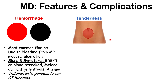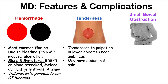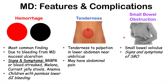Patients can also experience tenderness or pain — particularly on palpation around the lower abdomen near the umbilicus — or spontaneous abdominal pain. One complication is small bowel obstruction: the diverticulum hanging off the small intestine can cause twisting. More specifically, a fibrotic band connecting the diverticulum to the abdominal wall can cause a volvulus, leading to obstruction with abdominal pain, nausea, vomiting, and obstipation — meaning no passage of stool or flatus.